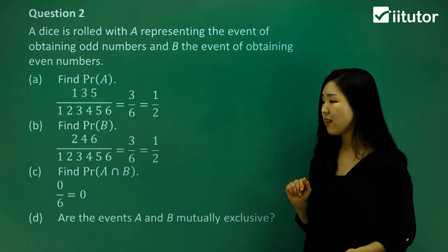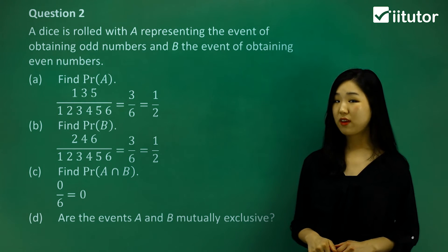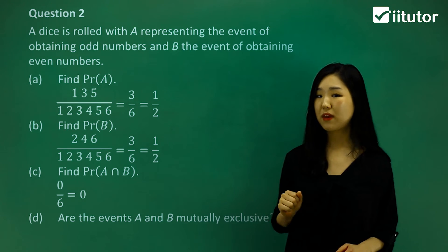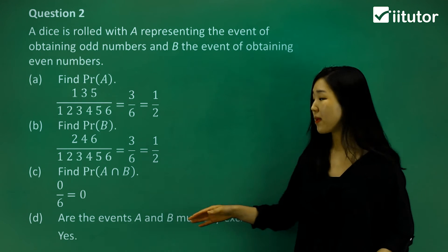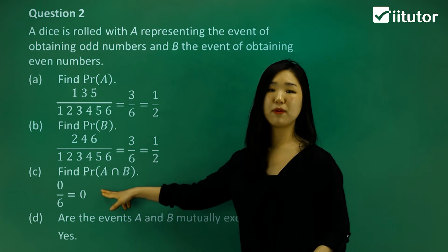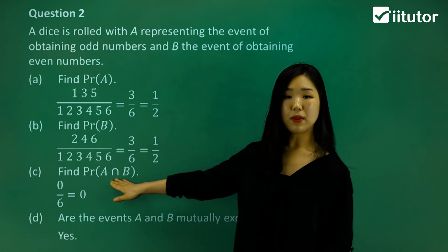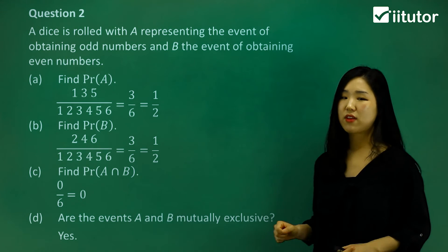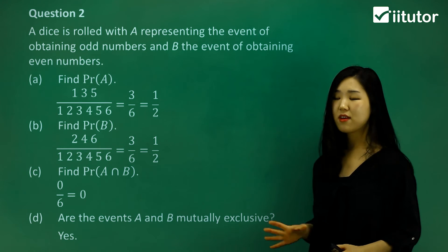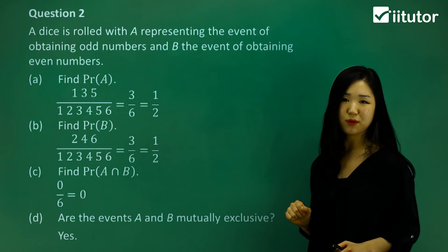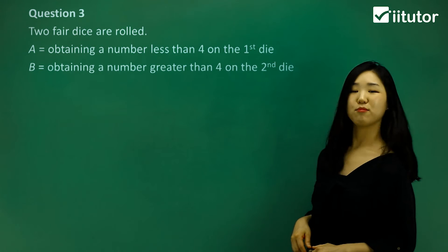This leads to part D: are events A and B mutually exclusive? Yes they are, because the probability of A and B is zero — they don't have any common parts and cannot be the same at the same time. It's one or the other.